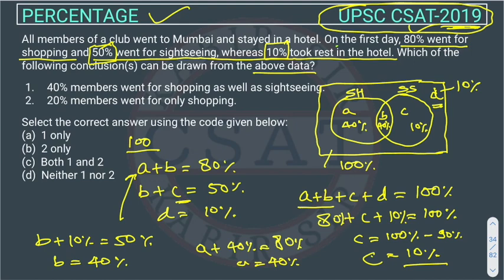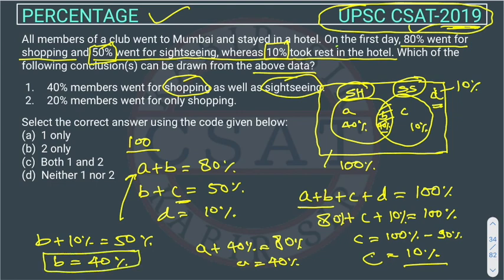Now we have computed all values. The first conclusion states that 40% of members went for both shopping and sightseeing. The people going for both are in region B — the intersection. The value of B is 40%, so this conclusion is correct.